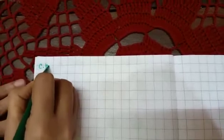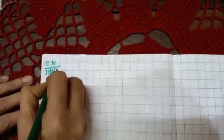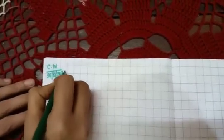Here you will write C.W. and today's date. Today's date is 10 oblique 8 oblique 2020. C.W. and date.